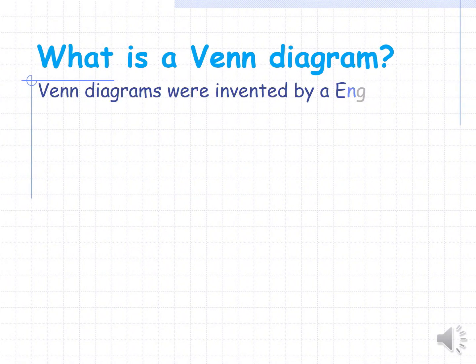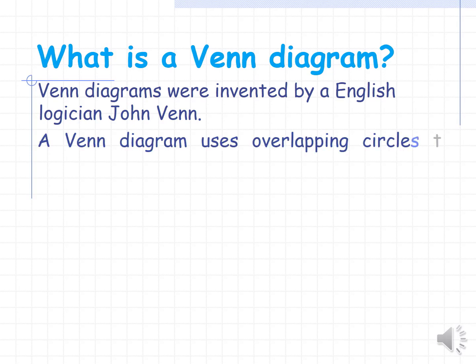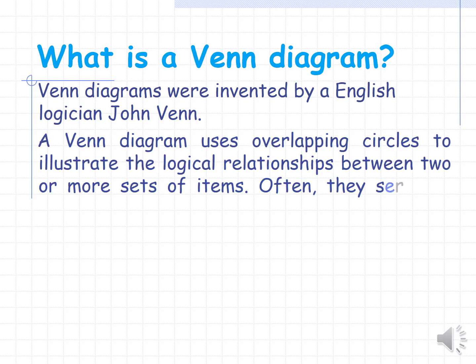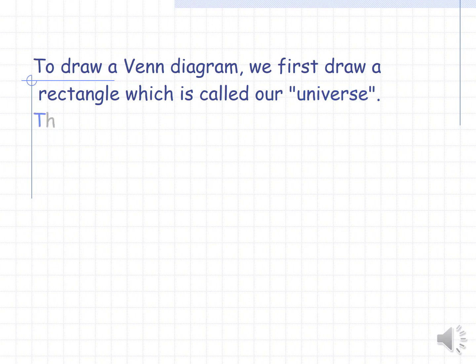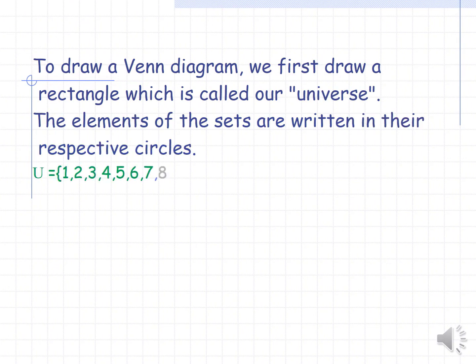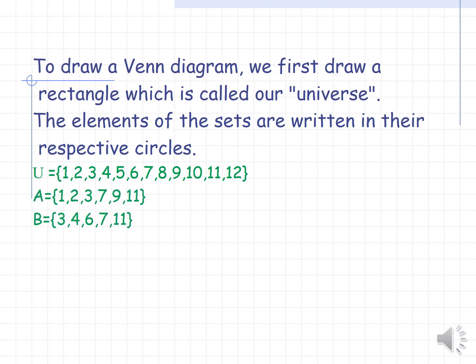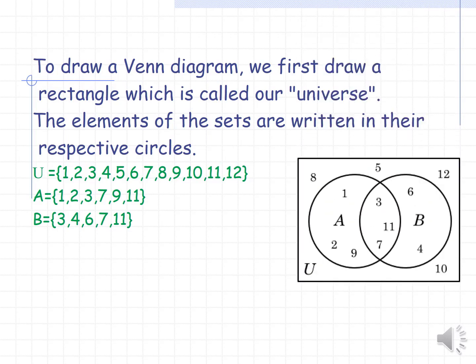What is a Venn diagram? Venn diagrams were invented by English logician John Venn. A Venn diagram uses overlapping circles to illustrate the logical relationship between two or more sets of items, and often serves to graphically organize things, highlighting how items are similar or different. To draw a Venn diagram, we first draw a rectangle representing the universal set. The elements of the sets are written in their respective circles. Here U is the set of numbers 1 to 12, and A and B are two sets represented by two circles. Elements 5, 10, 8, and 12 are not in any set, so we put them outside the circles.